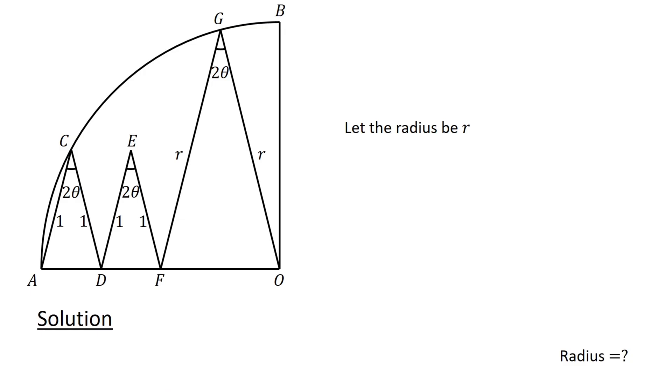Next, let's find an expression for the base of triangle FOG using the following formula. Given an isosceles triangle with side length A and vertex angle 2 alpha, the base B is given by 2A sin alpha.